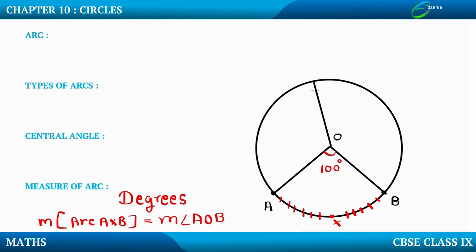Let me give one more example. Suppose I have two radii with points P and Q on the circle, giving arc PRQ, and the central angle is 30 degrees. Then the measure of arc PRQ is also equal to 30 degrees. That is, the measure of the central angle equals the measure of its corresponding arc, or equivalently, the measure of the arc equals the measure of the corresponding central angle.